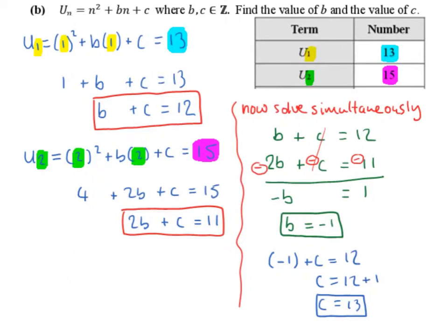So u₁ is equal to 13. We swap the n in each part of our formula for a 1. So uₙ becomes u₁, and each of those n's get swapped for a 1, and it's set equal to 13. 1 squared is 1, b times 1 is b, plus c equals 13. Then 13 minus 1 is 12, so b plus c equals 12 is one of our equations.